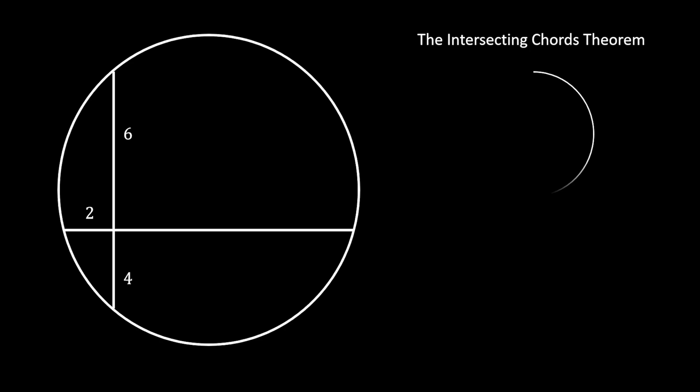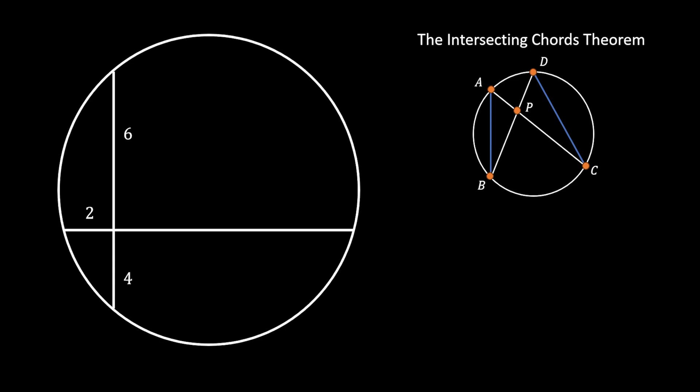In this theorem, we have a circle with two intersecting chords. We can mark those points of intersection as A, B, C, D, and P, so that AC and BD represent the chords and P represents the intersection point. If we draw lines AB and CD, we can see two triangles — ABP and CDP — and this theorem states that these two triangles are similar to each other. Using the rule of similarity, the product of segments AP and CP must equal the product of segments BP and DP.